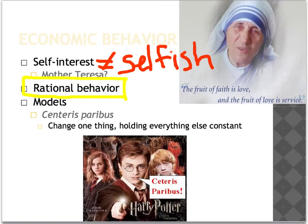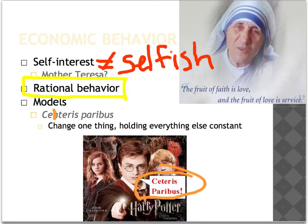Economists also work extensively with models — not fashion models, but tools to explain human behavior, traditionally through graphs. The first graph we'll examine is supply and demand. A key idea in these models is Ceteris Paribus, where you take one variable, change it, hold everything else constant, and observe the result. If you change multiple variables at once, you can't isolate the effect of any single one.